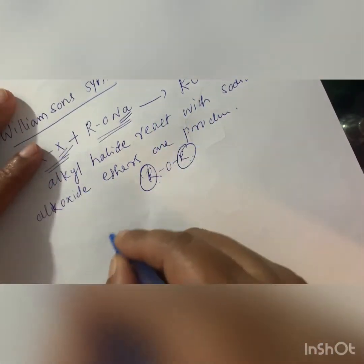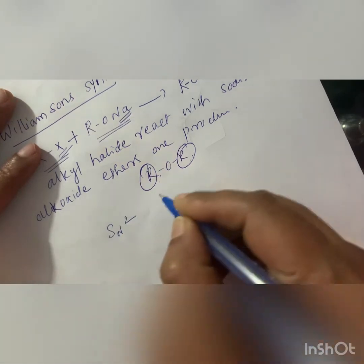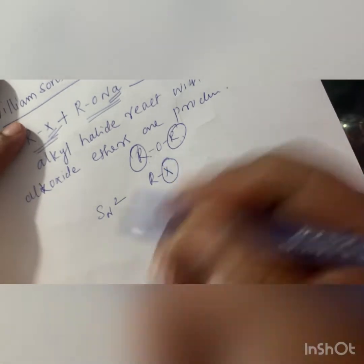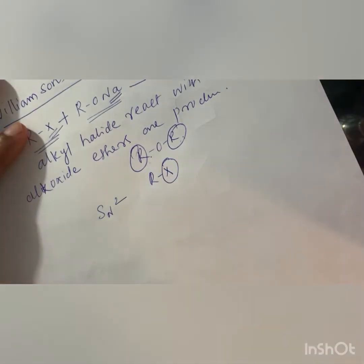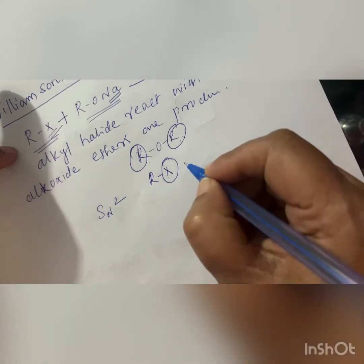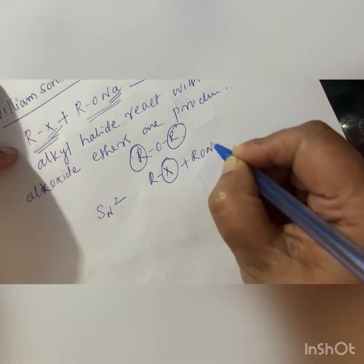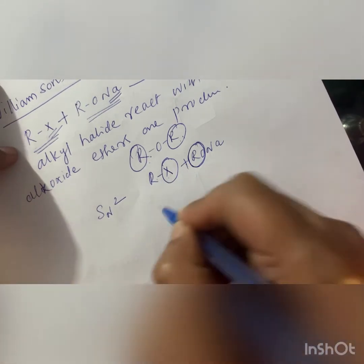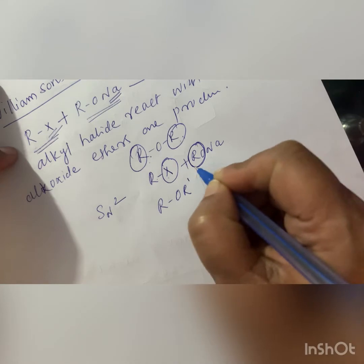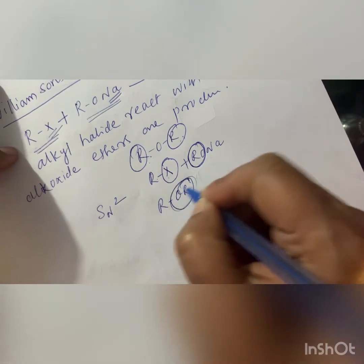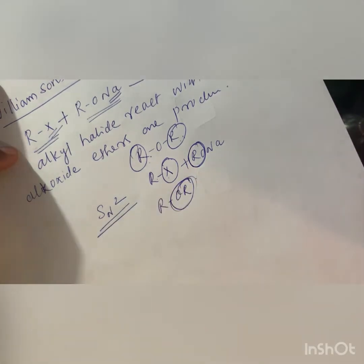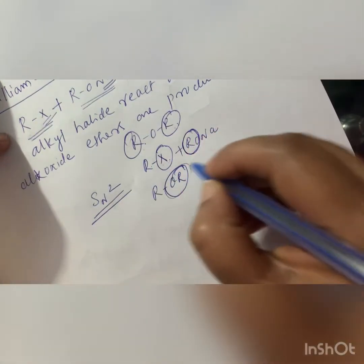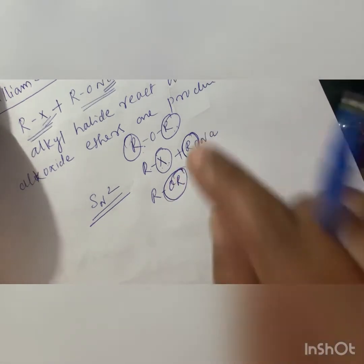The reason is that the reaction proceeds by an SN2 mechanism. In SN2, the X in RX is replaced by a nucleophile — here, the nucleophile is RO⁻. For SN2 mechanism to be possible, RX must be primary. That is the drawback of Williamson's synthesis: ethers where both R groups are tertiary cannot be prepared.